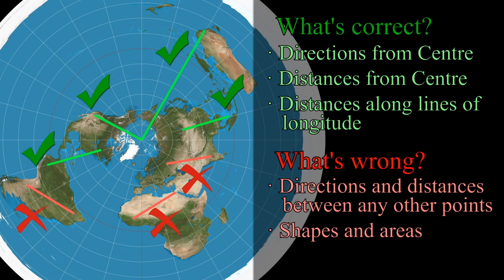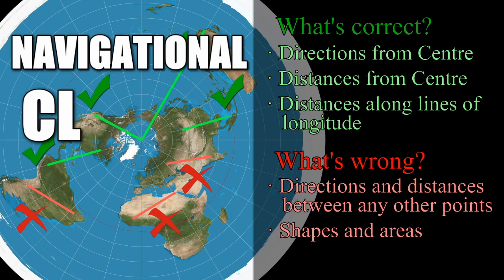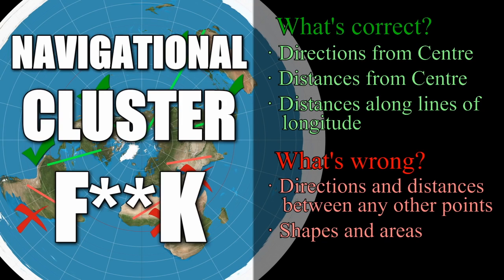We'll come back to that. The azimuthal equidistant projection does have some practical applications, but for general navigation, the problems highlighted mean it's an absolute clusterfk. Consequently, Flat Earthers parading this as their go-to map of the world gives some indication of just how little thought they've put into things, as well as revealing that they've never tried to use it.